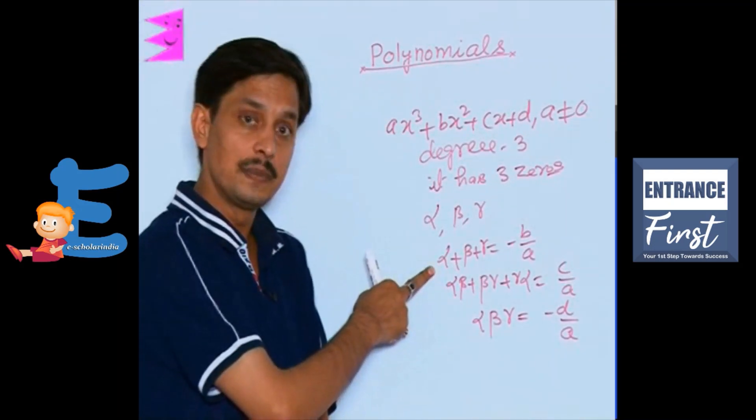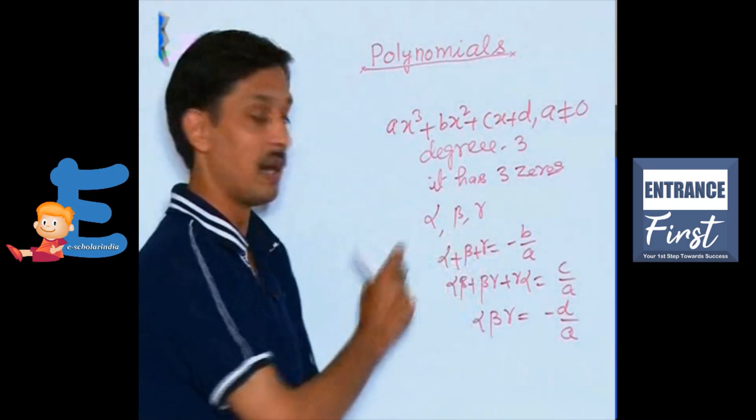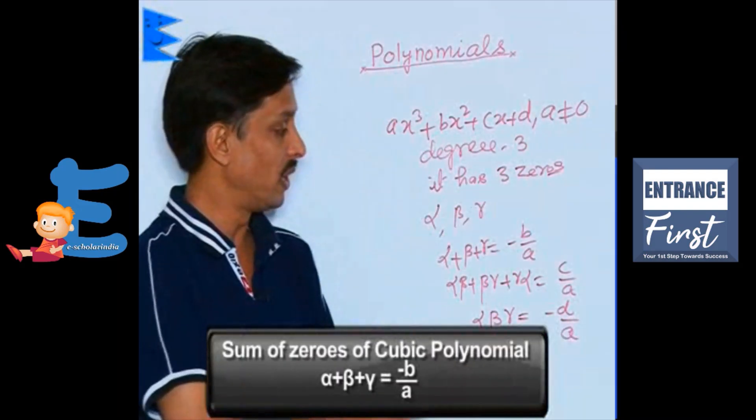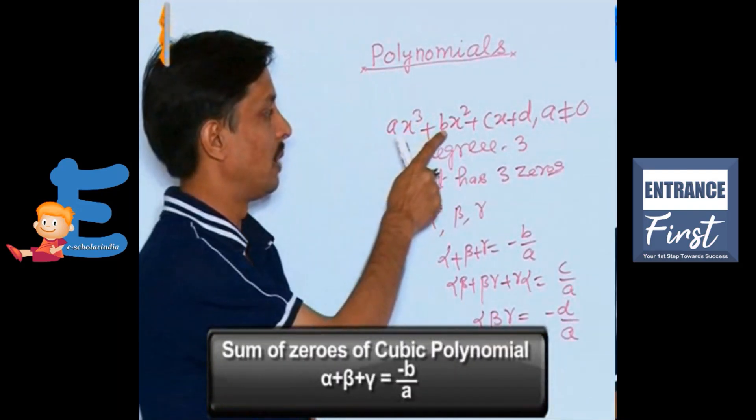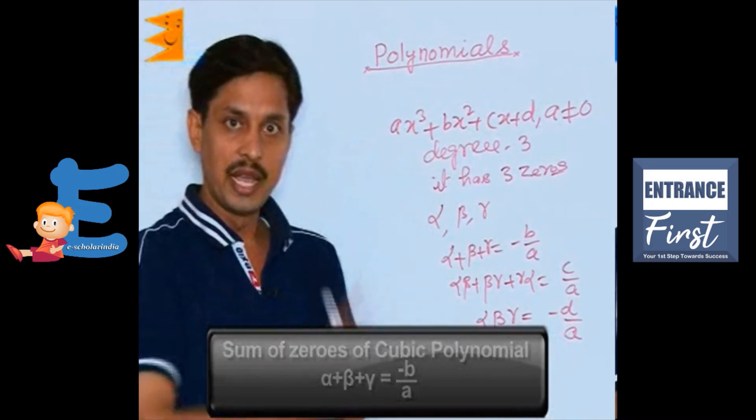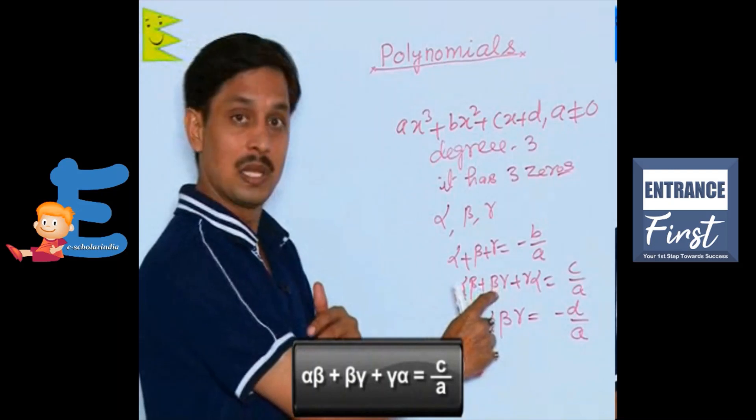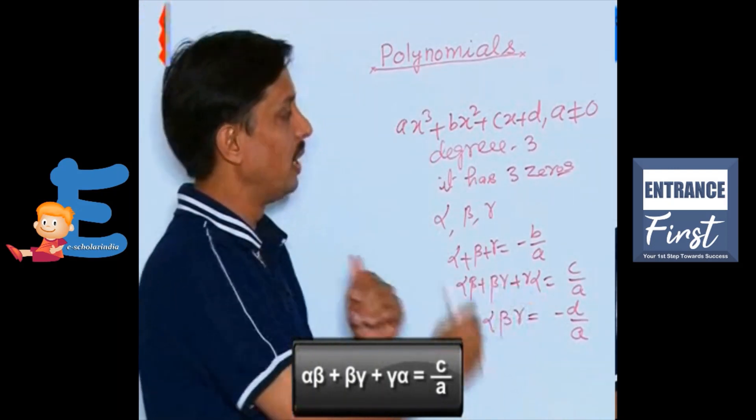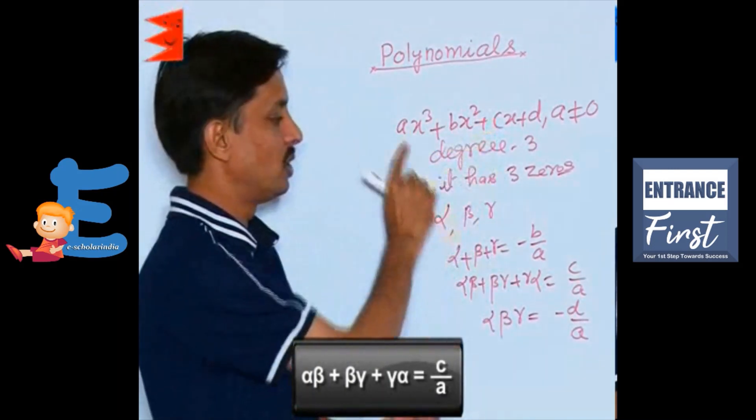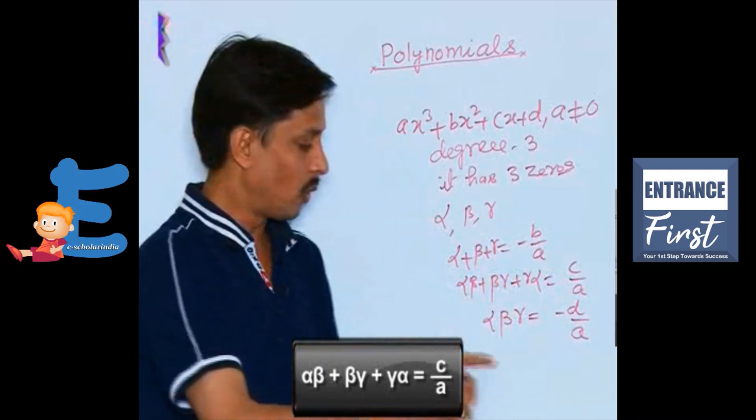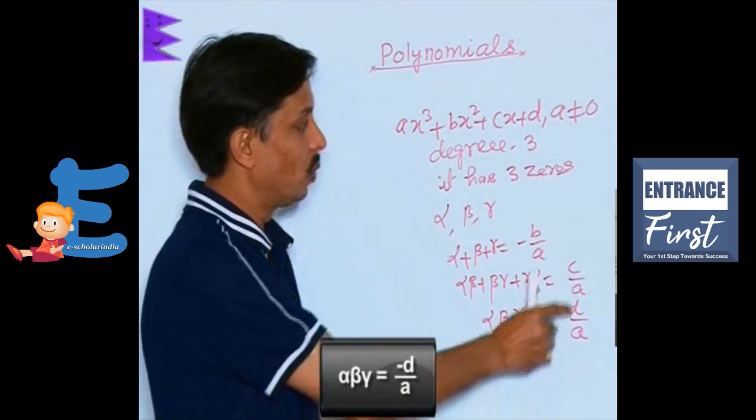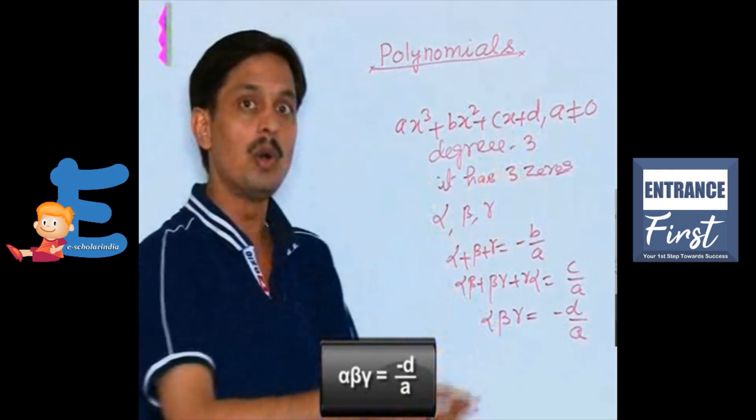Alpha plus beta plus gamma, that is sum of 3 zeros of any cubic polynomial, is the relation minus B upon A. Then sum of zeros taken 2 by 2, that is alpha into beta plus beta into gamma plus gamma into alpha, is positive C upon A. Then product of all 3 zeros alpha into beta into gamma is given by minus D upon A.